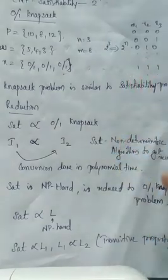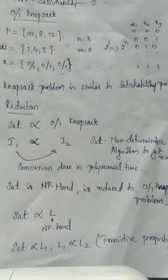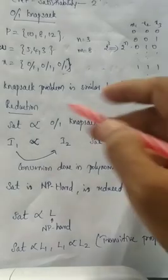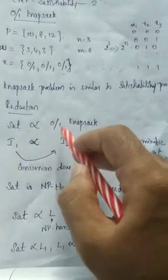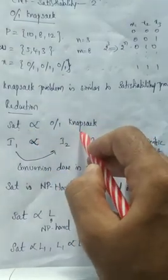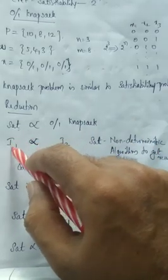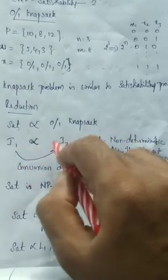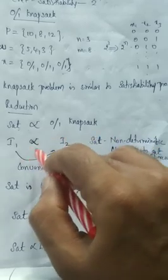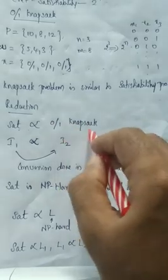For the 0-1 knapsack problem, we need to define NP-hard. We use non-deterministic algorithms. In other words, every instance of the satisfiability problem can be reduced to an instance of the 0-1 knapsack problem. This reduction shows the relationship between NP-hard problems.